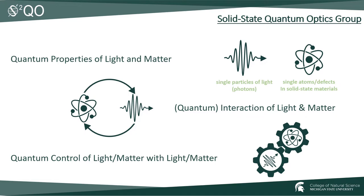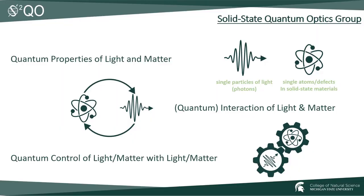In my group, we're interested in the properties and interactions of light and matter on a quantum level — the interactions of single particles of light, photons, with single atoms or defects in a variety of solid-state systems. On one hand, we want to use light to control the state of atoms or defects. On the other hand, we also want to use these matter-based systems to control the properties of light, and even use them to mediate interactions between multiple particles of light to make them do things light would normally not do.